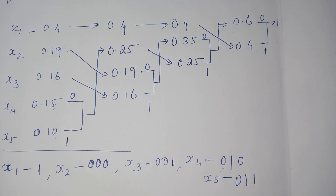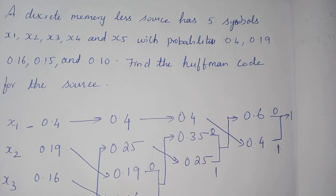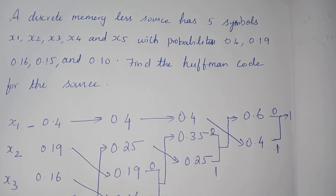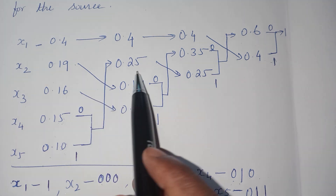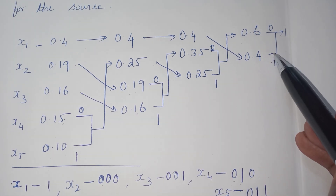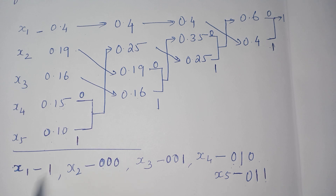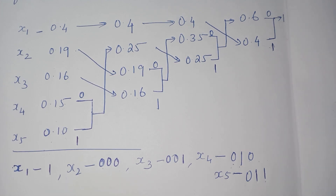To summarize: arrange the symbols in descending order based on probability, add the least two probabilities and rearrange at each stage, keep doing this until the sum of probabilities equals one, assign branch weights 0 and 1 for upper and lower bits, then track each symbol and write the branch weights in reverse order to get the code word. Thank you for watching. If you have any doubts, please comment and I'll be happy to answer.